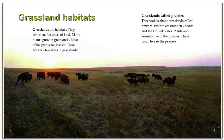I'm going to flip over to where it starts. It says: grasslands are habitats. They are open, flat areas of land. Many plants grow in the grasslands. Most of the plants are grasses. There are very few trees in the grassland. This book is about grasslands called prairies. Prairies are found in Canada and the United States. Plants and animals live in the prairies. These bison live in the prairies.